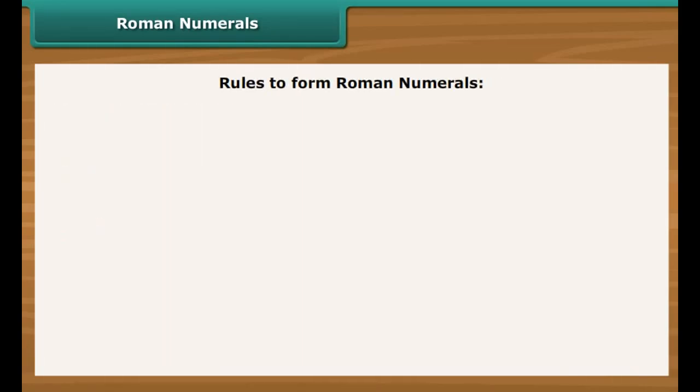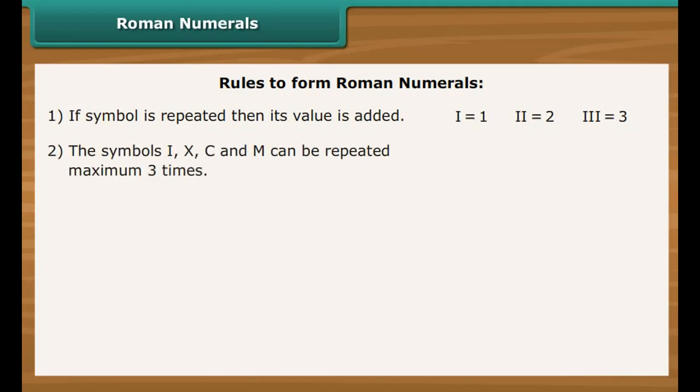There are certain rules to form Roman numerals. They are: 1. If a symbol is repeated, then its value is added. 2. The symbols I, X, C, and M can be repeated maximum three times. 3. The symbols V, L, and D can never be repeated.